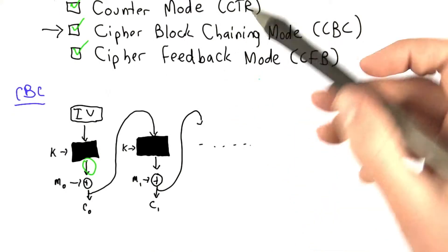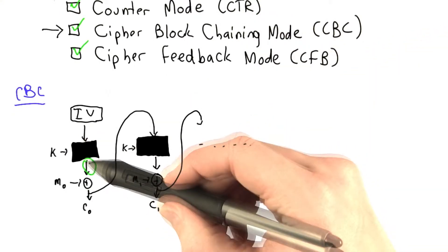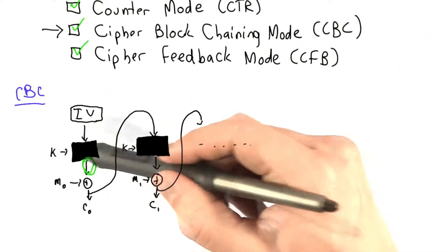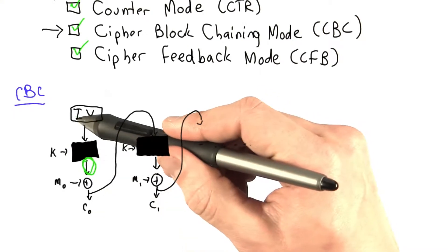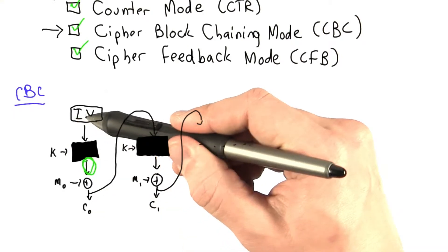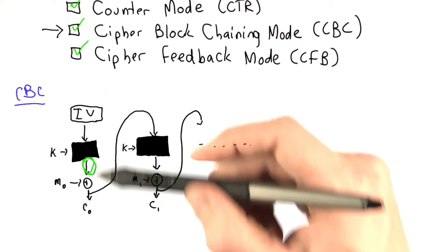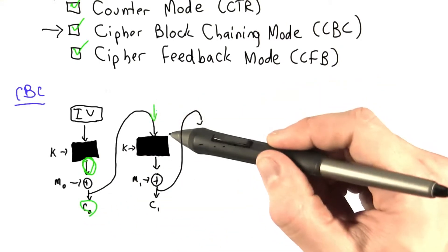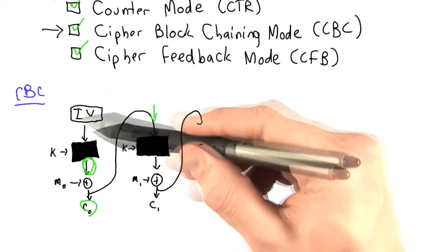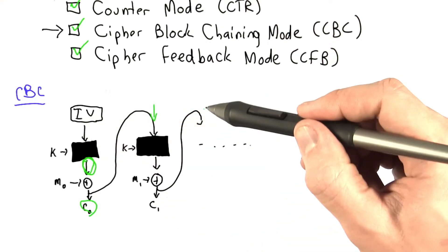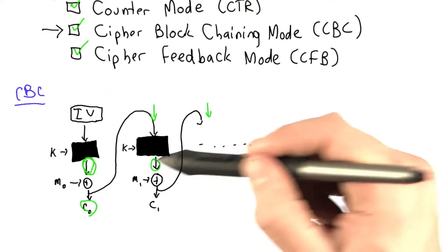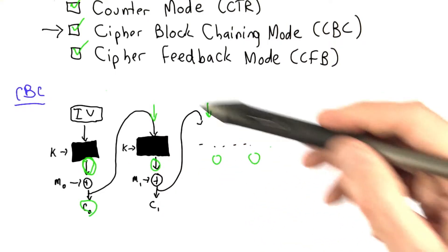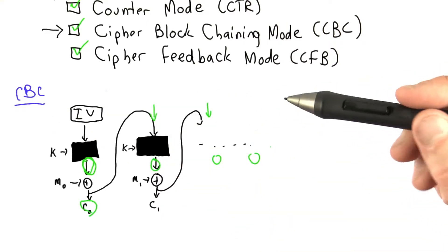For cipher block chaining mode, similar to counter mode, the important part is this input into the XOR again, which for the first block, we know the initialization vector, so that can be calculated. Independently, we are already given CNOT, which can be processed in parallel to this part. And C1 we know, and this can be processed in parallel. And again, we can calculate these components, and CBC can be decrypted in parallel.